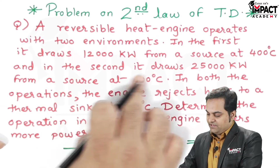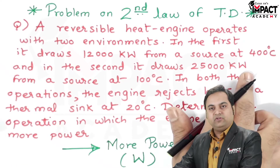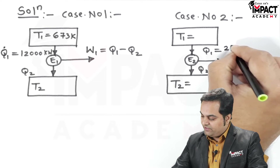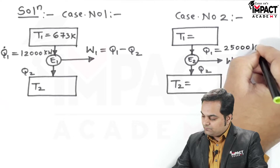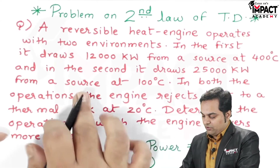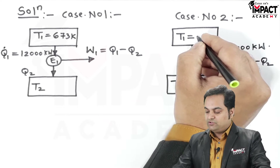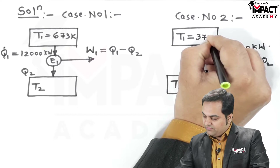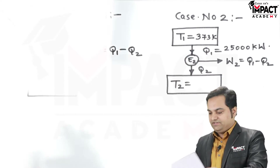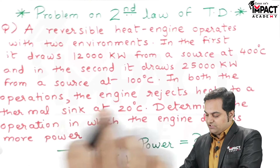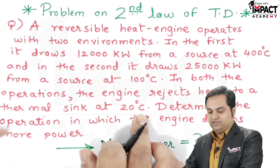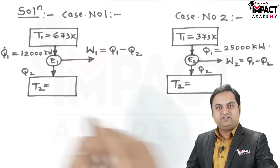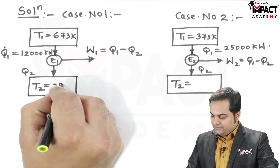In the second condition, it draws 25,000 kilowatts, so the heat taken by engine 2 is Q1 dot equals 25,000 kilowatts, taken from a source at 100 degree Celsius. Converting to Kelvin, that becomes T1 equals 373 Kelvin. In both operations, the engine rejects heat to a thermal sink at 20 degree Celsius, so the sink temperature T2 is the same for both cases: 20 plus 273 equals 293 Kelvin.